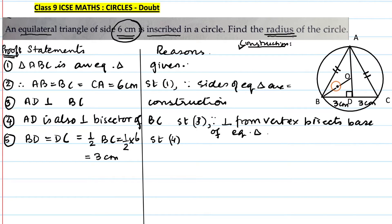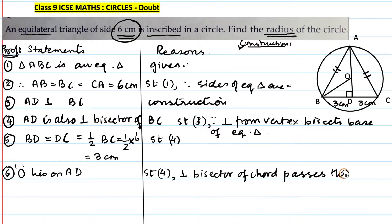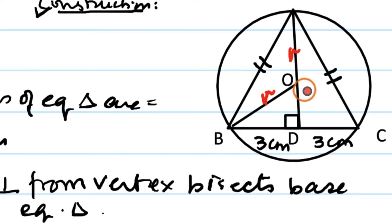To find the radius, we note that O lies on the perpendicular bisector AD. Statement 6: O lies on AD — reason: the perpendicular bisector of a chord passes through the centre. Therefore BO = radius and AO = radius.